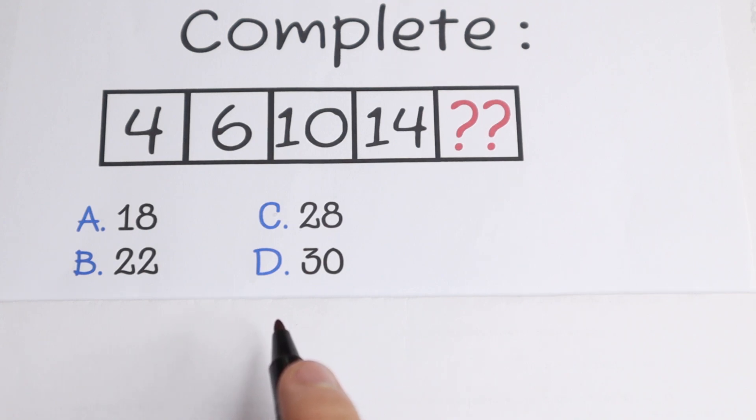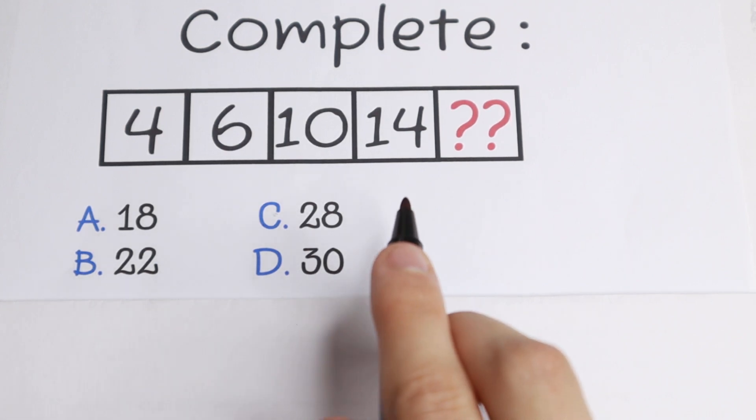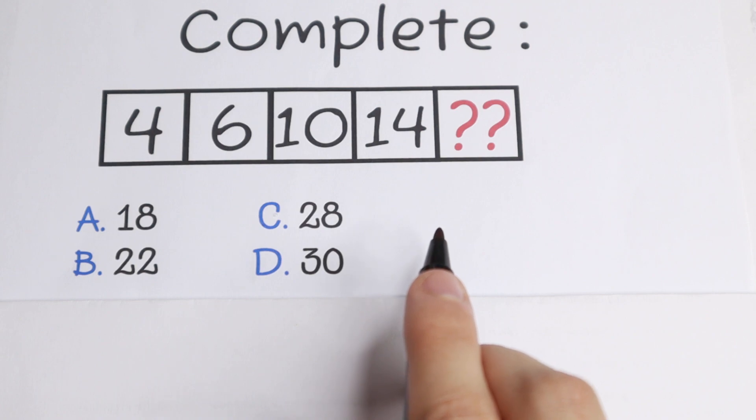I want to start with this: all these numbers are even numbers because even numbers can be divided by 2. We have 4, 6, 10, 14. All numbers are even numbers. And what is the trick right here?